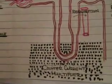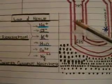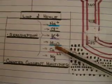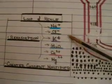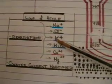The loop of Henle is involved with the reabsorption of electrolytes such as sodium, chloride, potassium, magnesium, and calcium. Likewise, it's involved with the reabsorption of water. Another key functionality of the loop of Henle is the countercurrent multiplier.